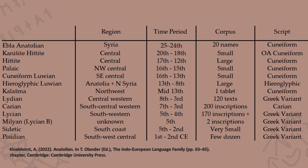We have information concerning the region where each language is said to be from, the time period it's attested, the size of the corpus, and the script that is used. When you see 'Greek' here, please bear in mind that it means an alphabet derived from, or closely related to, that of Greek, although the exact relationship is usually unclear.